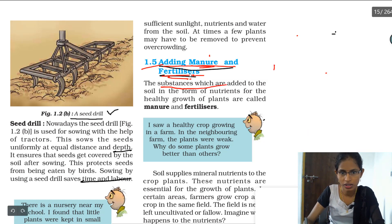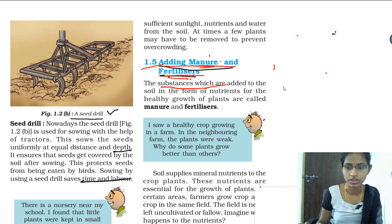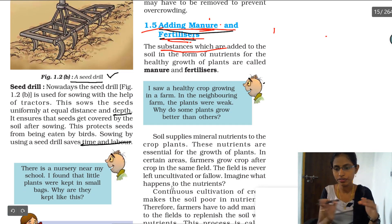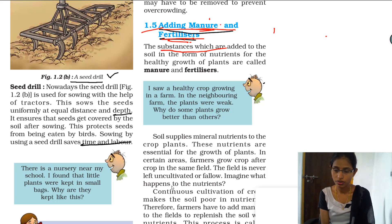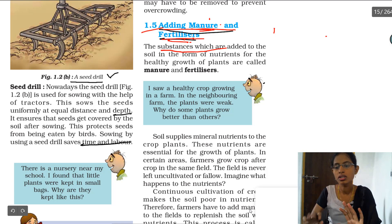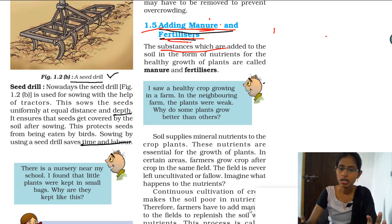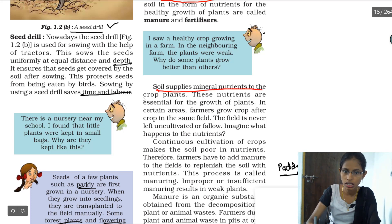Manure and fertilizers are substances added to the soil to increase nutrients for the growth of plants. If you observe any field, in some fields the plant growth is very good and healthy crops are grown, while in others plants are weak — and this difference is because of the nutrients present in the soil. The soil must contain nutrients and minerals required by the plants.